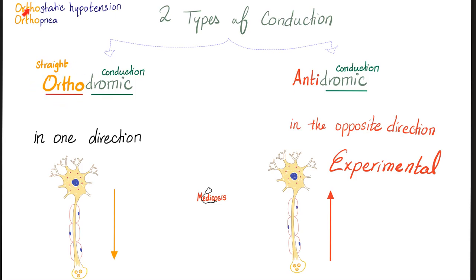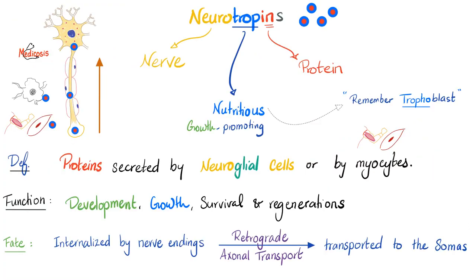'Ortho' means straight — that's why we have orthostatic hypotension, meaning you get hypotension when standing straight, and orthopnea, where 'pnea' means breathe — you can only breathe when sitting up, but cannot breathe when lying back down.